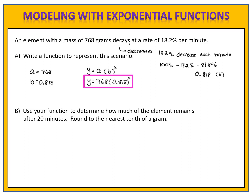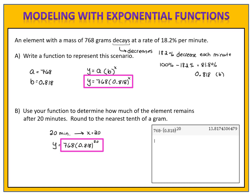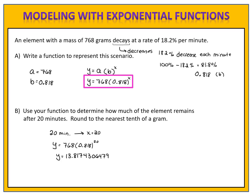Part b asks us to use the function to determine how much of the element remains after 20 minutes. Please pause the video and come back when you're ready to compare answers. We want to know the amount after 20 minutes, so x equals 20. We evaluate 768 times 0.818 to the 20th power on our calculator, which gives 13.8174306479. Rounded to the nearest tenth, the amount remaining is 13.8 grams.